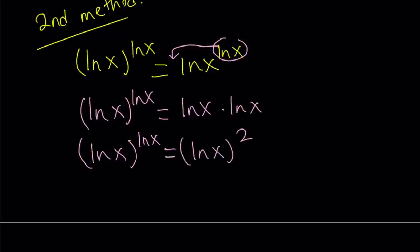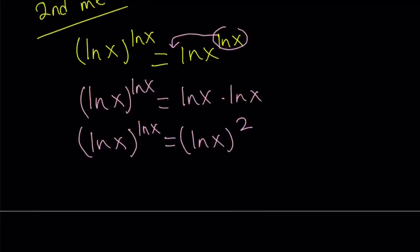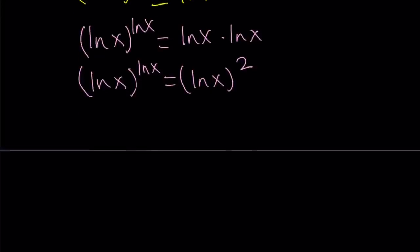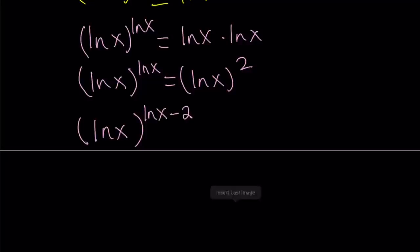Notice that ln x squared is greater than or equal to zero, because when you square something it's not going to be negative. So I'm going to divide both sides by ln x quantity squared, and get the following: ln x to the power ln x divided by ln x to the second power — I can just subtract the exponents — and set this equal to one.